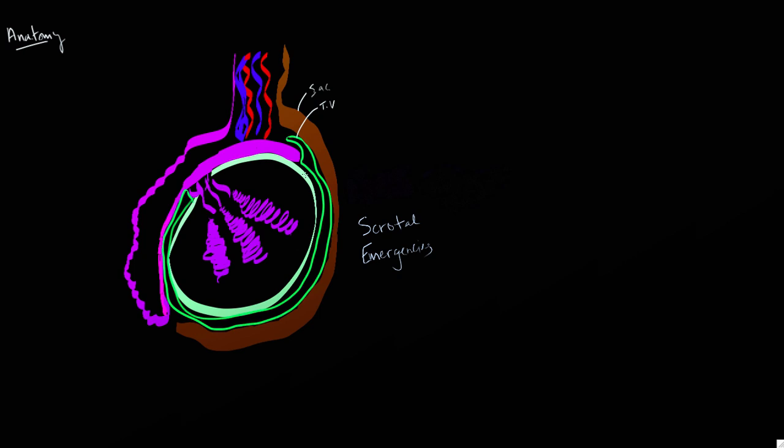Deep to the tunica vaginalis, you have the tunica albuginea. This is a thin fibrous layer that surrounds the scrotum. From this, there are individual septations that divide the scrotum into multiple compartments, anywhere from 250 to 400 compartments.